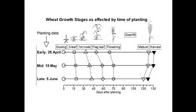But when we plant late, especially into June, the grain filling period occurs during the warming-up phase of our winters, which would be late August, September, and even October. And so the grain filling period is shortened or hastened. The longest maturity of wheat is when you plant early — as much as 130 to 140 days — whereas with a late planting it might be decreased to 110 to 120 days.